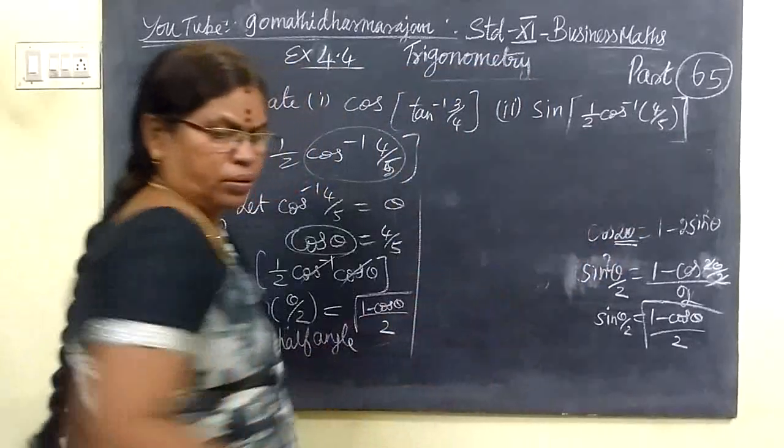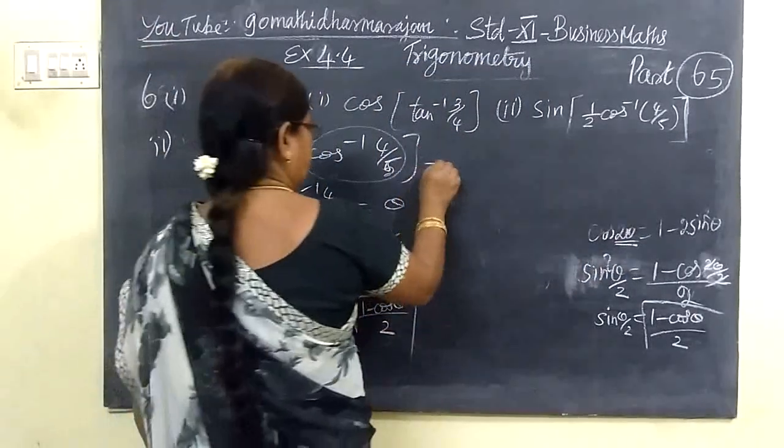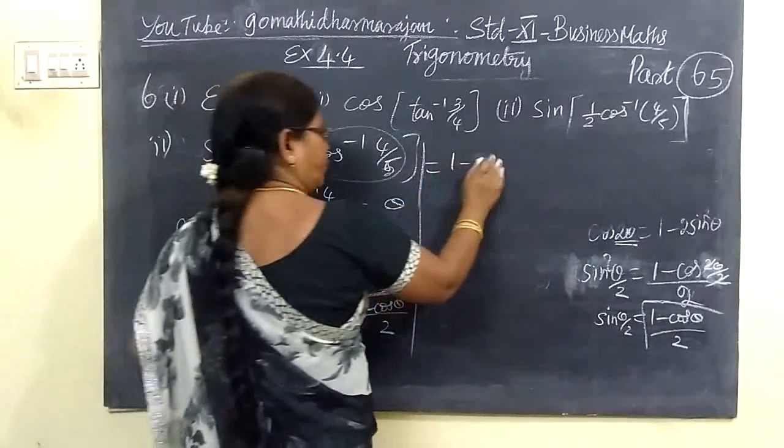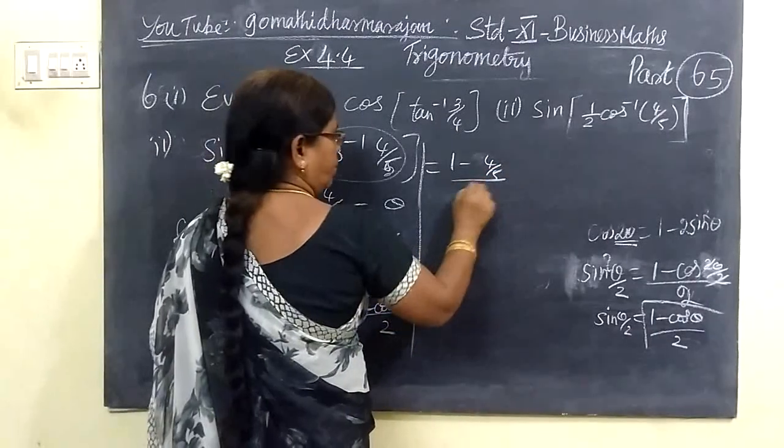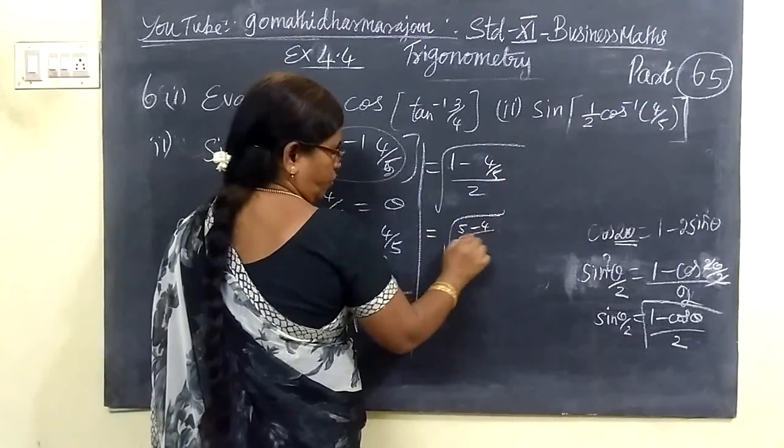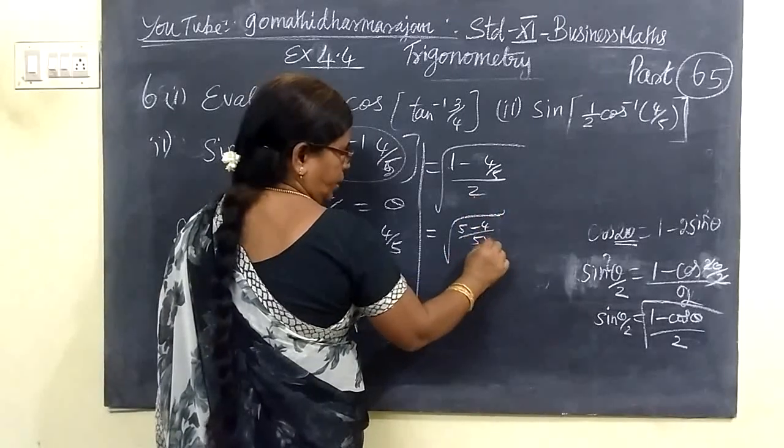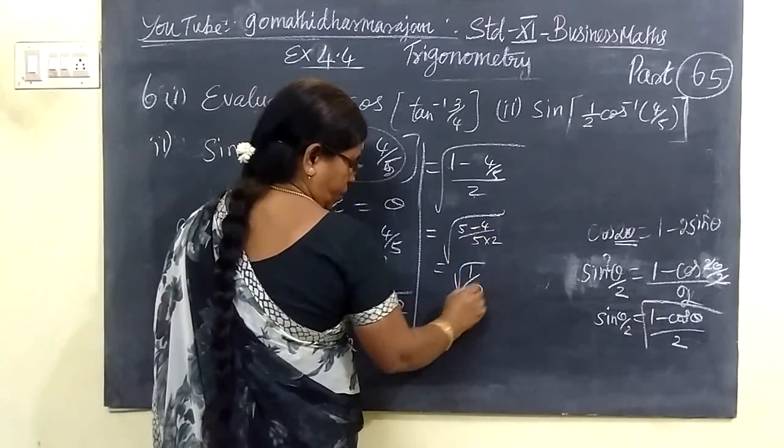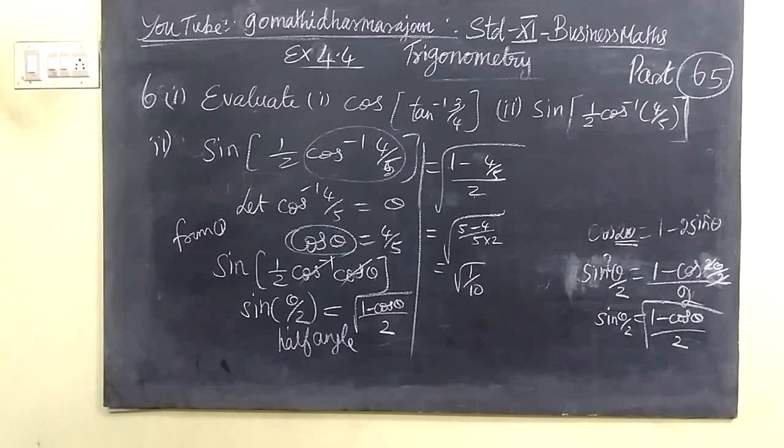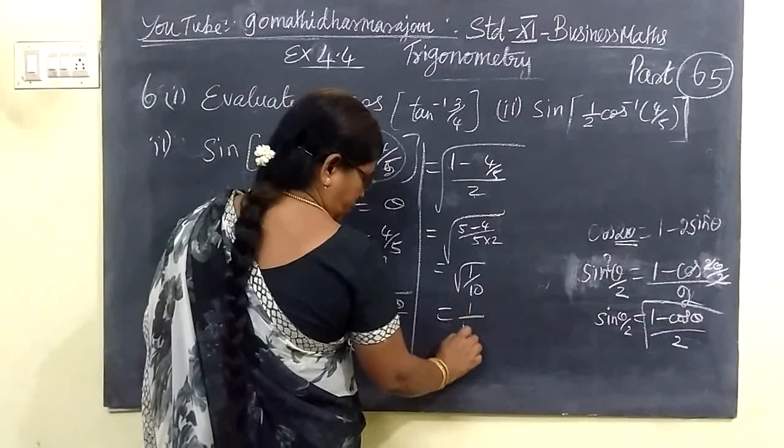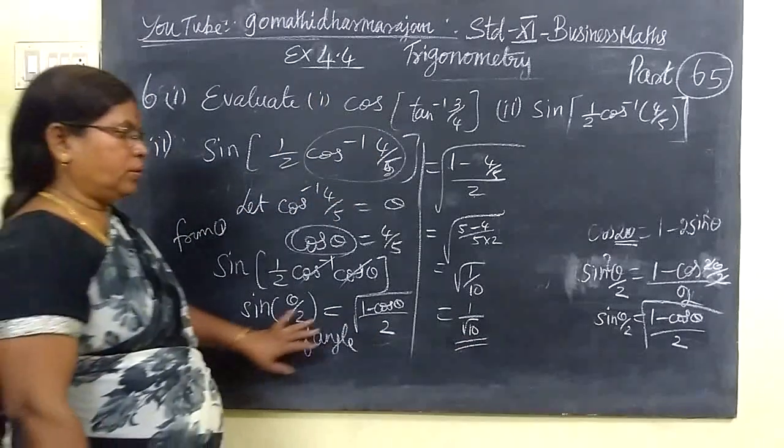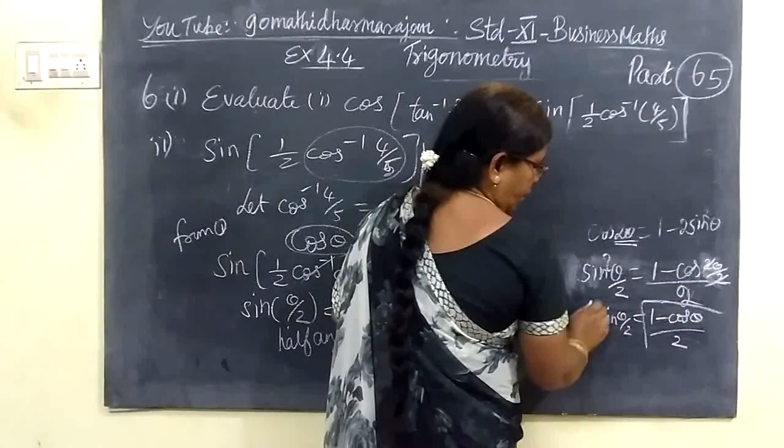So here we write: sin theta by 2 equals root of 1 minus cos theta by 2. That is root of 1 minus 4 by 5 by 2, which equals root of 1 by 10. So we see the answer for this. This equals 1 by root of 10.